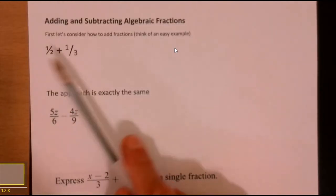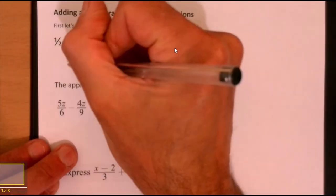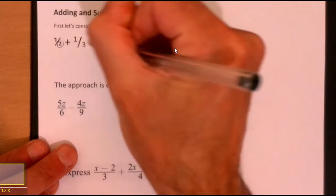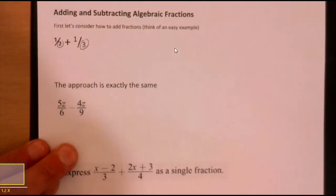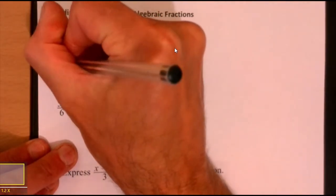You need to understand this first. Just think about what you do. So if you're going to do a half plus a third, what do you do? You get a common denominator, don't you? We're looking to get those numbers to be the same. If those numbers are the same, then adding fractions is simple, but we've got to match them up.